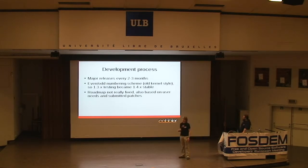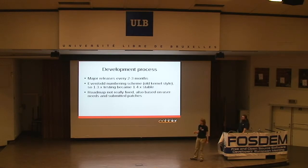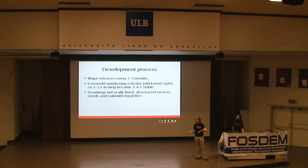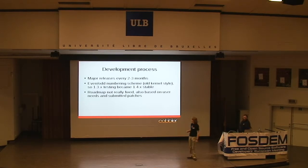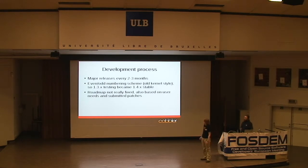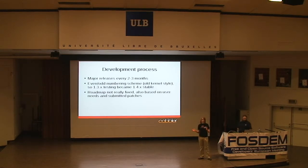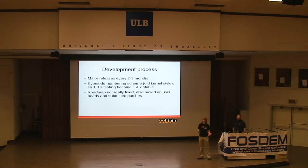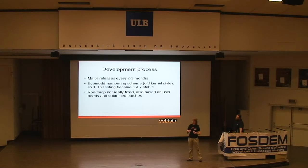On the development process: the goal is to release a major Cobbler feature release about every two to three months using an old kernel development scheme - so 1.3 became 1.4 stable, they're working on 1.5 now which will become 1.6 in hopefully a month or two. The roadmap is flexible - if you've got a really cool feature, join the mailing list and send patches or share your ideas. The goal is to consolidate custom deployment systems - like shops running their own PHP kickstart generators - into one really flexible, versatile deployment tool.